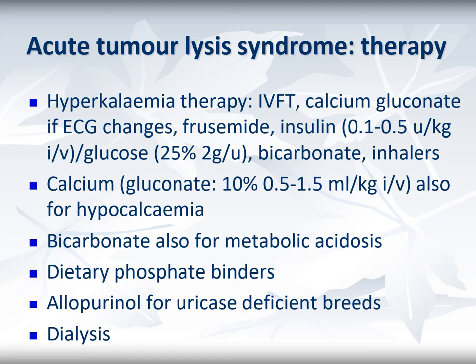Typical treatment includes calcium gluconate to protect the heart from ECG changes induced by hyperkalaemia, followed by directly controlling potassium concentration through furosemide by intermittent injection or constant-rate infusion, then perhaps insulin and glucose combinations, bicarbonate, or inhaled medication. For hypocalcaemia with tremors, elemental calcium may be useful beyond calcium gluconate, with more routine use of bicarbonate for metabolic acidosis and dietary phosphate binders. If the patient is a uricase-deficient breed, allopurinol might also be useful. It is worth acknowledging early on that prognosis can be very poor and opting for dialysis early.